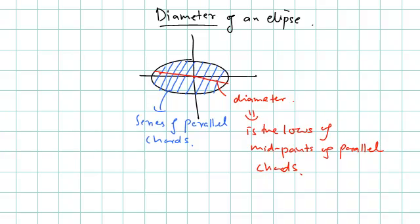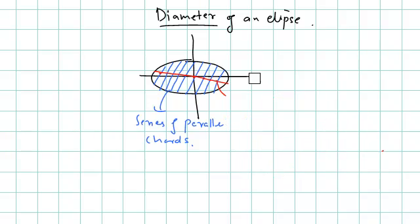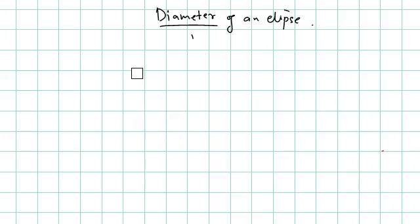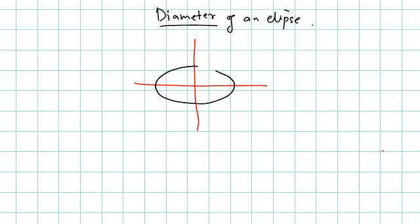If we derive the equation of the locus, we will see it is a line passing through the center of the ellipse. To derive the equation of the diameter, suppose there is a variable chord representing a series of parallel chords, so the slope is fixed — slope equals m. This variable chord moves such that it is always parallel to itself, and we find the locus of its midpoint, assuming the midpoint is (x₁, y₁).